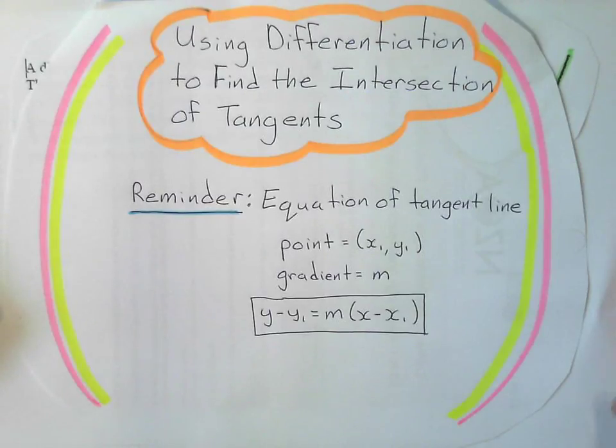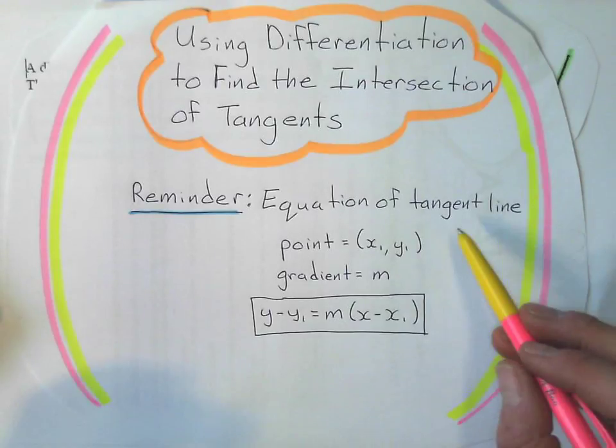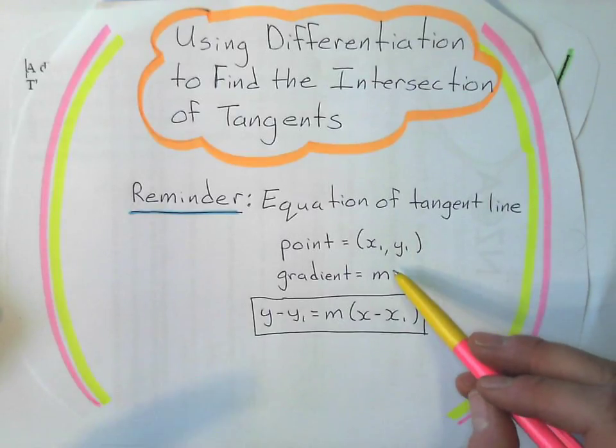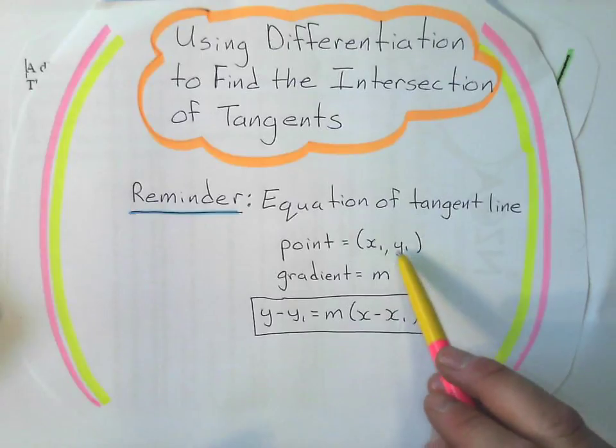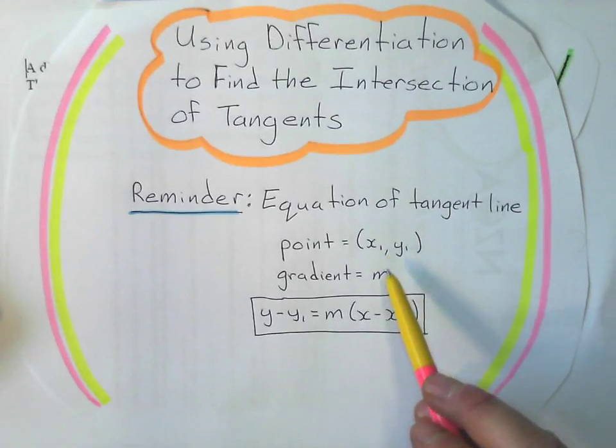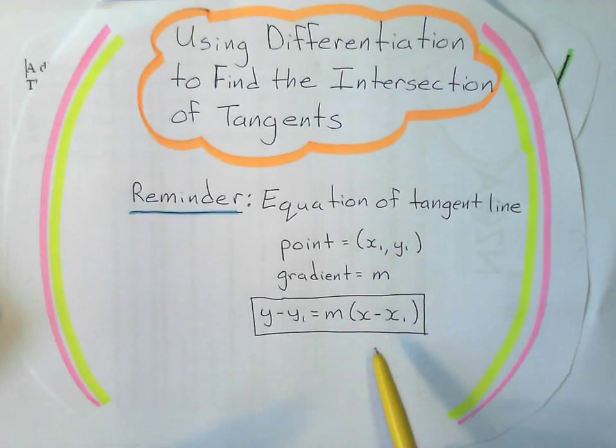Firstly, we're going to be getting the equation of a tangent line, which is a straight line. We just need two things for that. For any line, we need a point on that line (x₁, y₁), and we need the gradient of that line. We use this point-gradient form of an equation: y - y₁ = m(x - x₁).